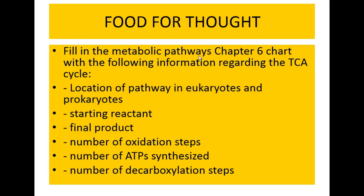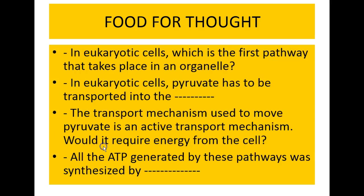At this point you should be able to fill in the TCA portions of the chapter six chart on metabolic pathways, noting the location of the pathway in eukaryotes and prokaryotes, the starting reactant, the final product, the number of oxidation steps per glucose molecule, the number of ATP synthesized per glucose molecule, and the number of decarboxylation steps per glucose molecule. In eukaryotic cells, which is the first pathway that takes place in an organelle?